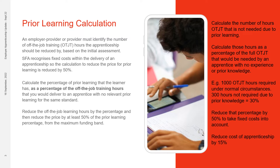Once you have calculated the number of hours that off-the-job training is not needed due to prior learning, you calculate those hours as a percentage of the full off-the-job training that would be needed by an apprentice with no experience or prior knowledge. An example would be 1,000 off-the-job training hours required under normal circumstances. 300 hours are not required due to prior knowledge, which equals 30%. You reduce that percentage by 50% to take fixed costs into account and then reduce the full cost of the apprenticeship by 15%.